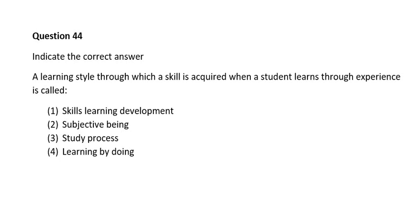Question forty-four. Indicate the correct answer. A learning style through which a skill is acquired when a student learns through experience is called: number one, skills learning development; number two, subjective being; number three, start a process; number four, learning by doing. The correct answer is number four: learning by doing.